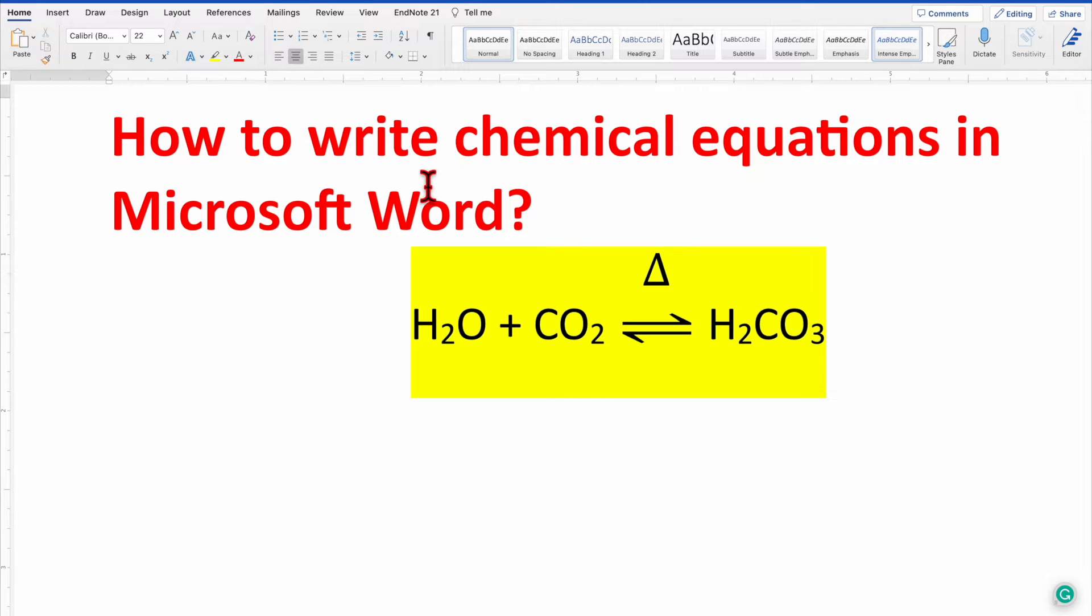Show you how to write chemical equations in Microsoft Word. Here is an example: H2O plus CO2, reversible sign with the increment symbol that represents temperature, equal to H2CO3. So let's begin. Type H2O space plus